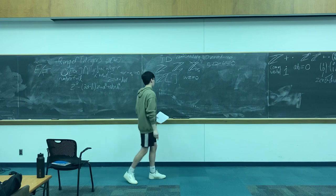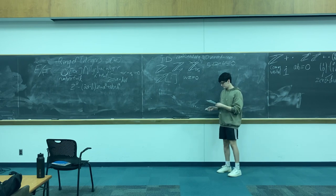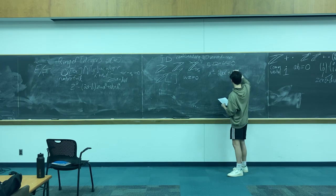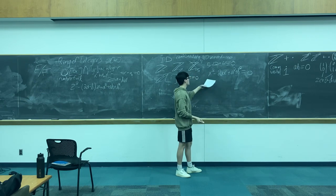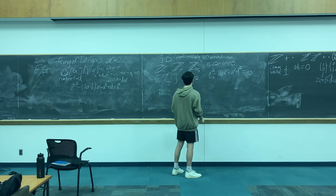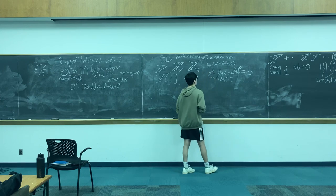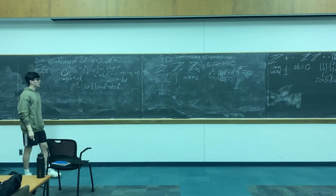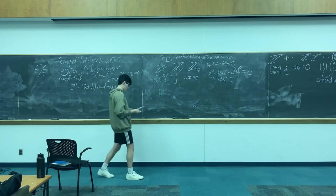So Gaussian integers are another example of an integral domain, and they're also a ring of integers. Gaussian integers: any element a plus bi is going to be a solution to a certain polynomial. You can clearly see it has integer coefficients, it's monic. You take the set of solutions, a plus bi where a and b are integers, intersect that with Q adjoined i, and you get the Gaussian integers, which are a ring of integers. Q adjoined i is a number field, and any element in the Gaussians is a root of that polynomial — take the intersection, and that's a ring of integers.